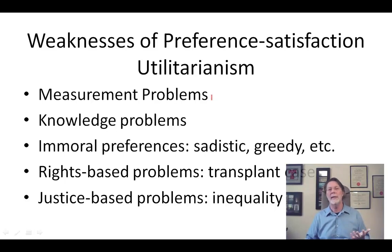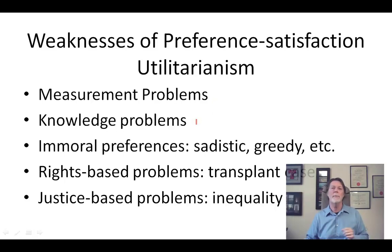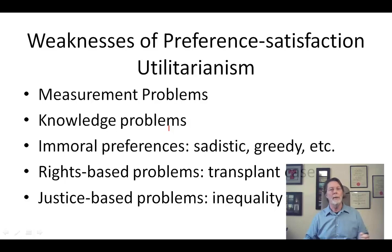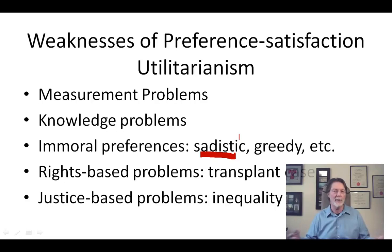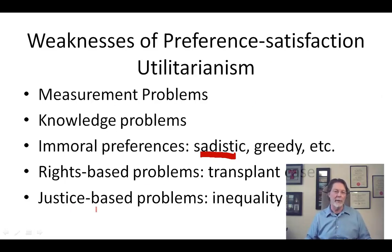There's a measurement problem: how do you measure the intensity of a preference? We're going to talk about two solutions to this. There are also knowledge problems — how can you have enough knowledge to satisfy people's preferences? And there's a problem of immoral preferences, like sadism. Should you satisfy the sadist's preferences? It just seems like sadistic preferences should not be counted, and yet preference utilitarianism as a theory doesn't have a resource for saying that some preferences should not be counted.